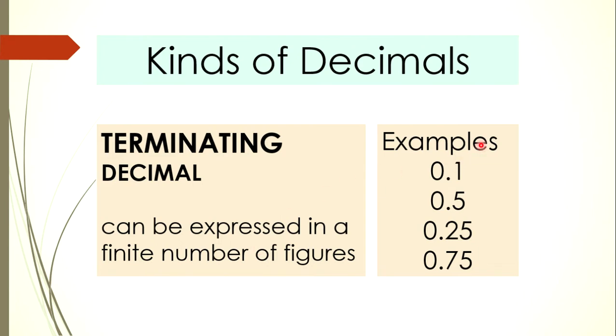Examples of terminating decimals are 0.1, 0.5, 0.25, 0.75, and the likes.